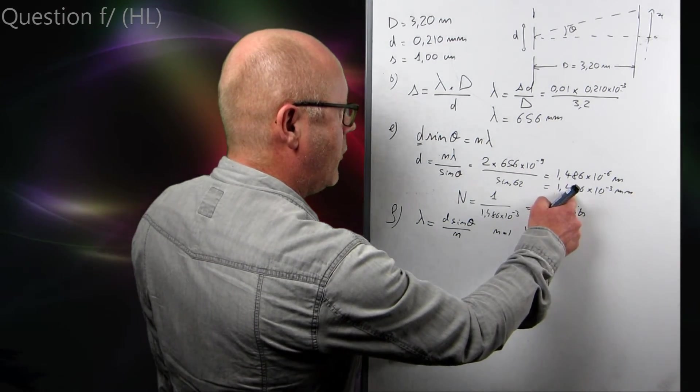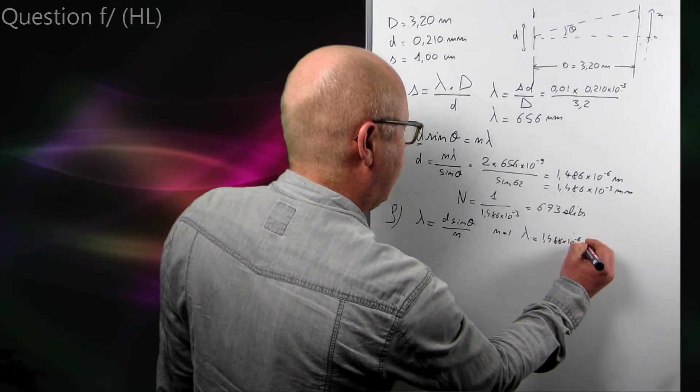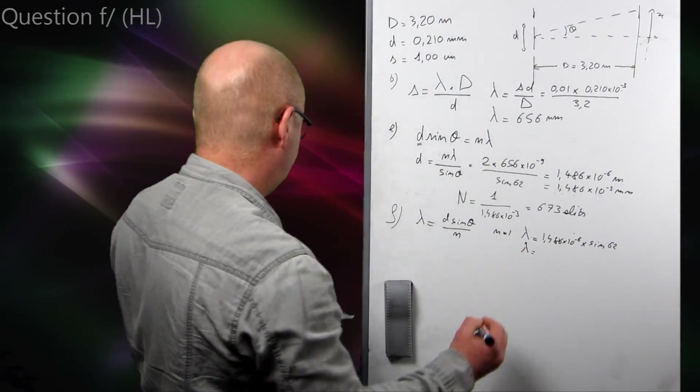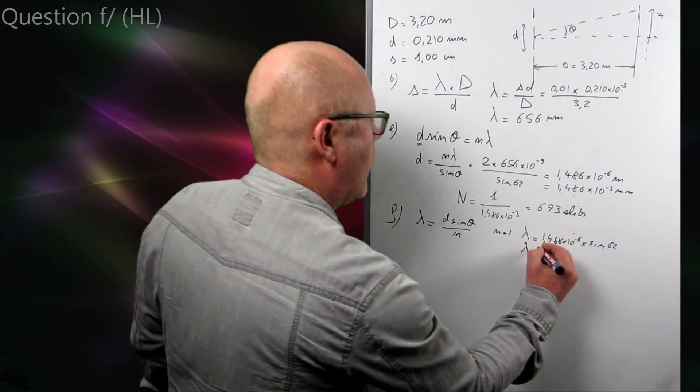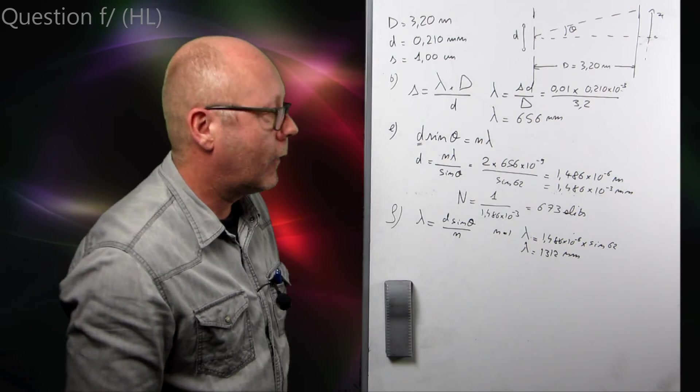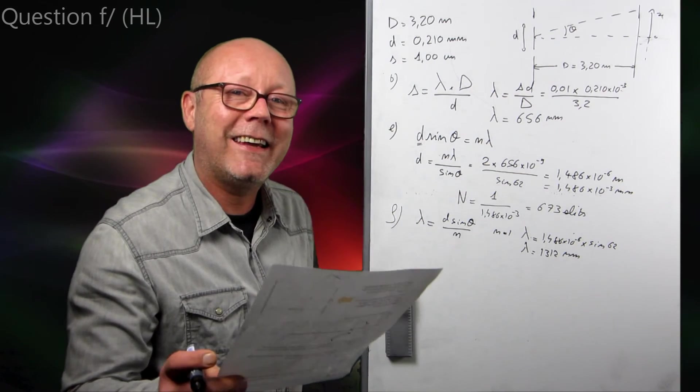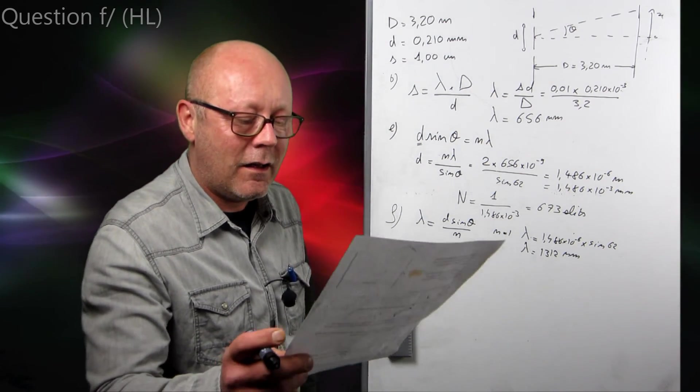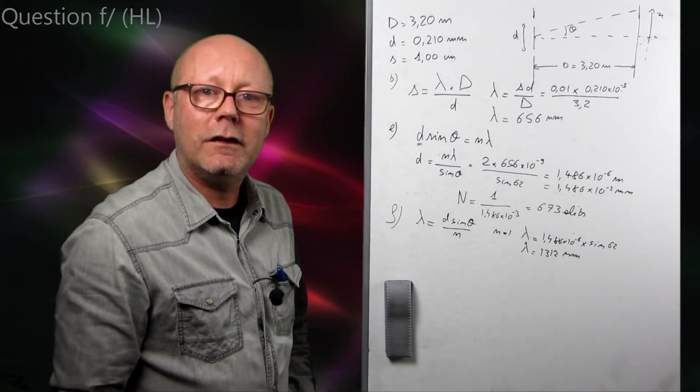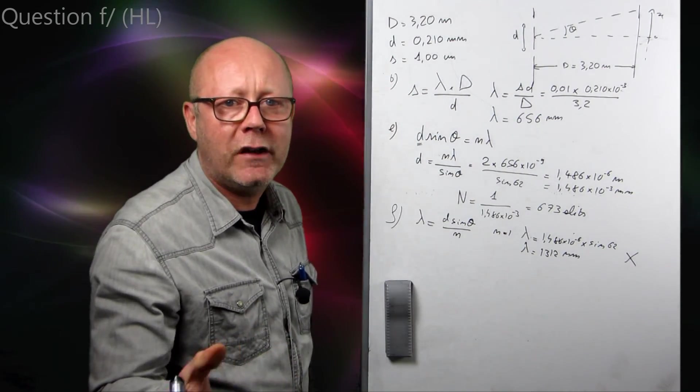So, for N equals 1, I got lambda equals D sin theta. So, D is this value, so I'm going to put it in metres this time. 1.486 by 10 to the minus 6 multiplied by sin of 62 degrees. And I find for lambda, 1,312 nanometres. So, okay, that would be maybe the solution, but if I read the text carefully, another beam of visible light. This is not visible light. So, it's not this one.